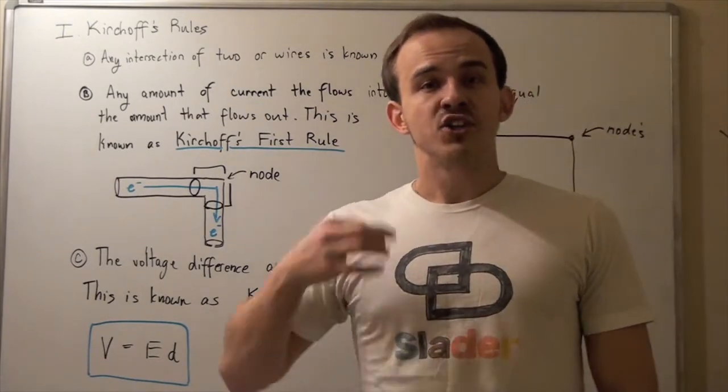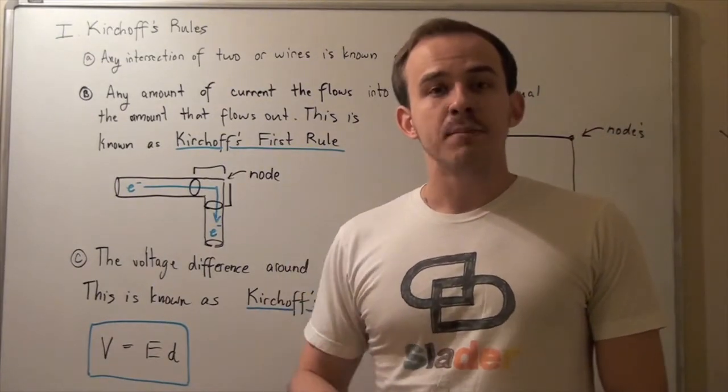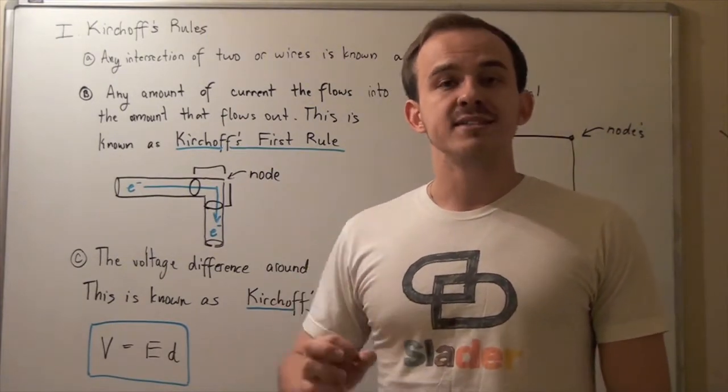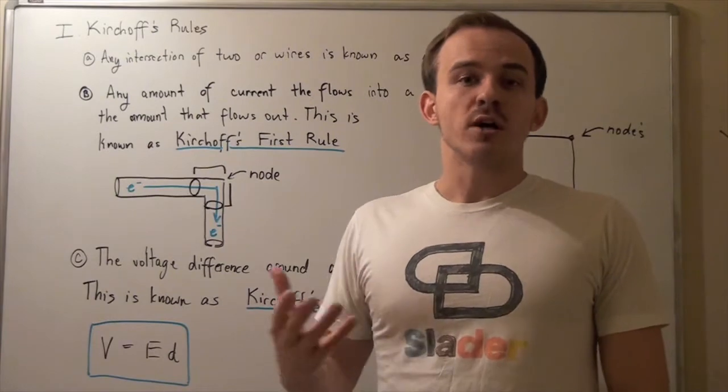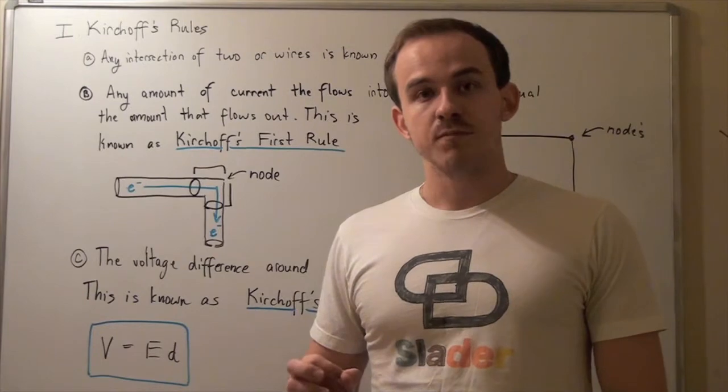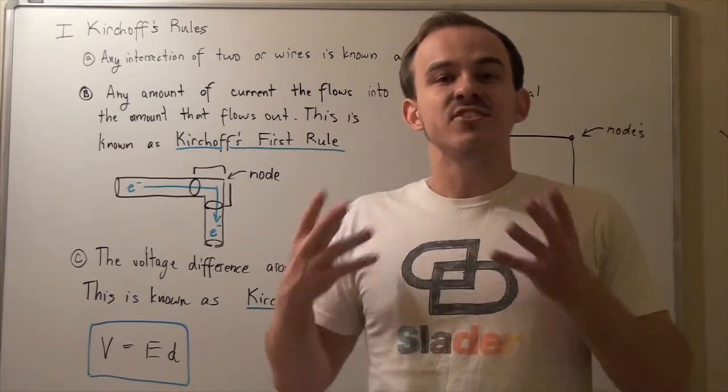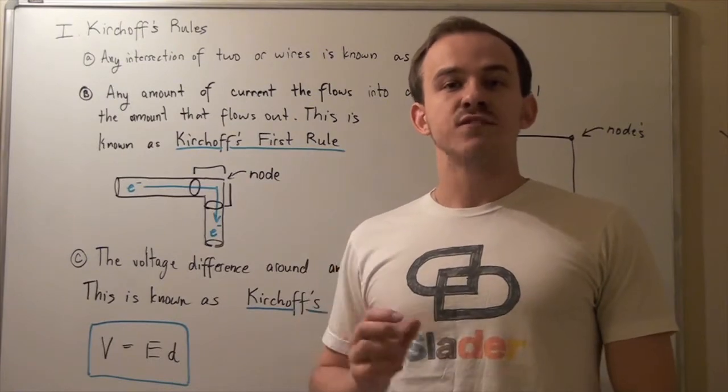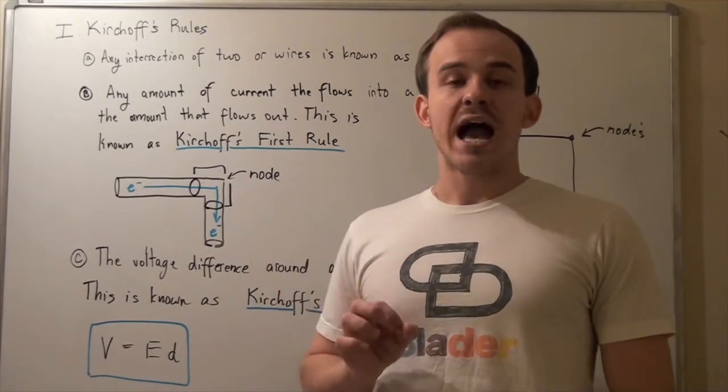Remember, within our universe, charge cannot be destroyed and it cannot be created. The amount of charge remains the same. We can talk about a transfer of charge, but charge cannot be destroyed or created. Whenever a system gains charge or loses charge, it simply means electrons flow out or flow into our system.